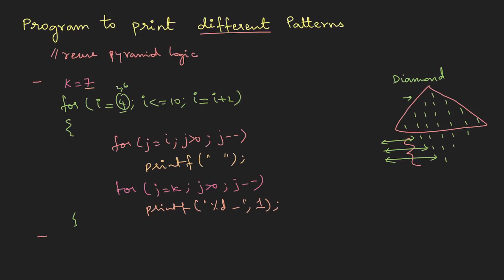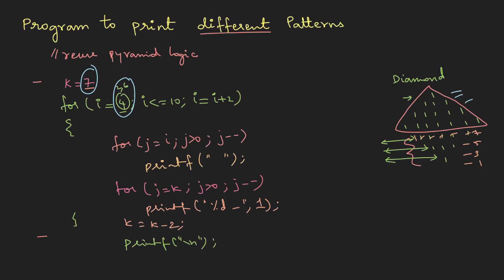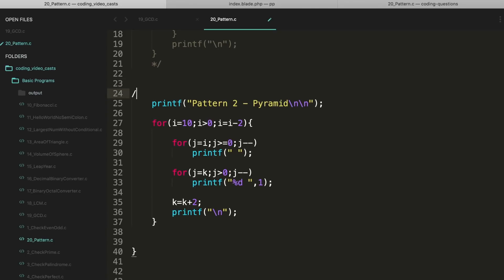Initially there are 7 numbers, then 5, then 3, then 1 — so k decreases by 2 for each iteration. We also need a printf newline. The exact values for i and k depend on what was used in the pyramid logic. Let's implement it on the machine.